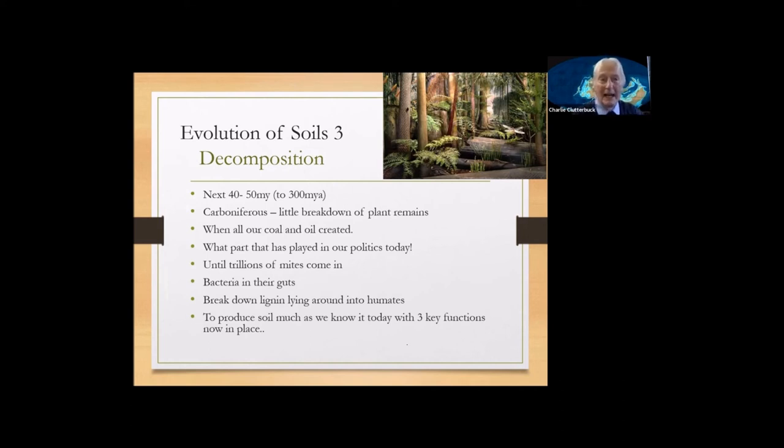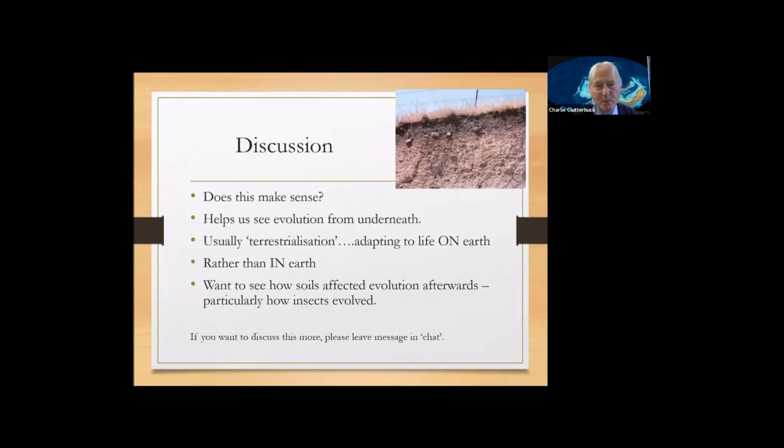So trillions of mites coming. And when I talk about trillions, there are something like 14 quadrillion mites and springtails in British soils. I don't know who's counted them, but that's like 14,000 trillion, an enormous amount, each with the bacteria in the guts, each breaking the lignin down. That's when it occurs. And so at about the period of about 300 million years, the soils looked much as they do today in terms of those three big functions. They had aggregates, they had springtails and mites, but there were no insects. And so I'll just pause there to see if anybody wants to throw any questions at me about whether that makes sense. And what it's done for me is all the evolution I now read about, everybody else seems to be reading about evolution on the surface of the soils. It's called terrestrialisation, how creatures adapted to life on Earth. But I actually want to develop the life in Earth because the soils didn't stop evolving 300 million years ago. They've been evolving ever since.